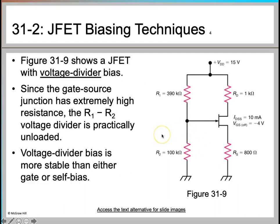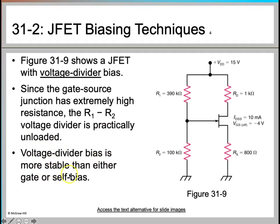The next biasing technique is voltage divider biasing. This circuit forms a voltage divider using R1 and R2 resistors, along with RD and RS. Since the gate-source junction has extremely high resistance, the R1-R2 voltage divider is practically unloaded. Voltage divider bias is more stable than either gate or self-bias and is one of the most reliable methods.